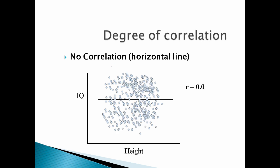Then there is no correlation, which means R is equal to 0. When we connect the line, this line is horizontal and the points are completely scattered randomly. The values are randomly plotted with no pattern. This is no correlation.